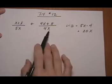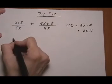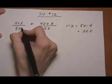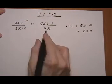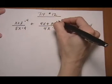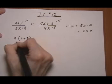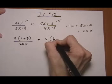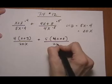So that means our LCD is 20x. So the LCD should contain each denominator completely, without having any extra factors in there. All right, that means our next step is going to be to turn the fractions into new fractions with a common denominator of 20x. So the 5x, we would need to multiply by four, do the same to the top. And the 4x, we would need to multiply by five, do the same to the top. So that gives us 4 times x plus 3 over 20x plus 5. And the entire numerator is being multiplied by the 5, and that's why I'm putting parentheses. So 5 times 4x plus 8 over 20x.